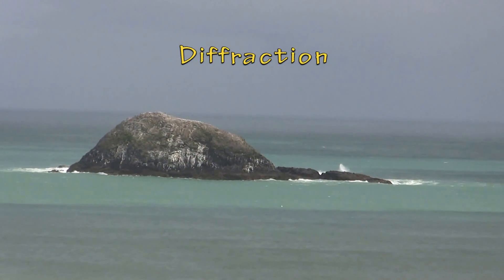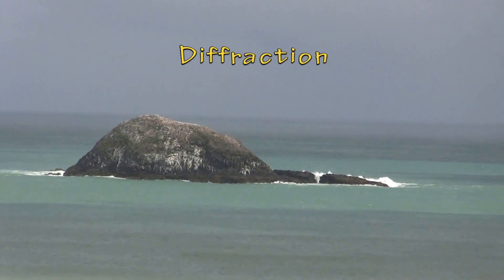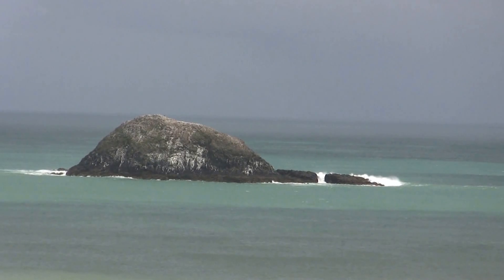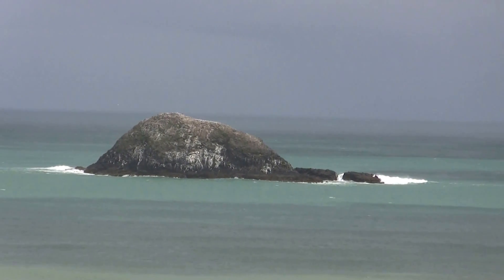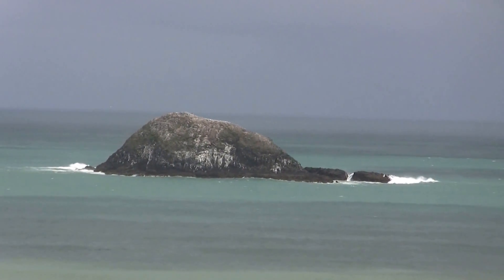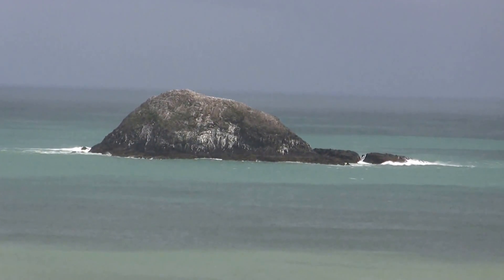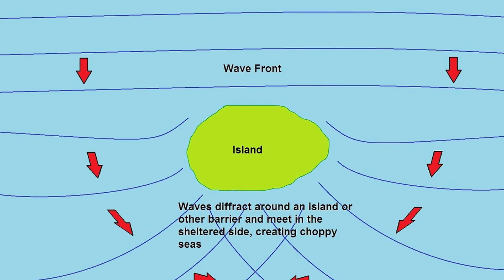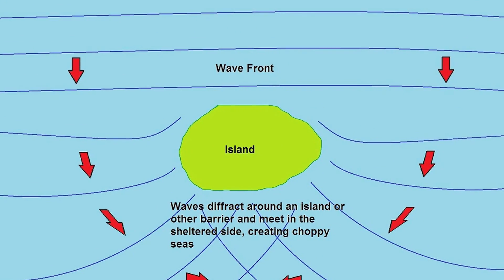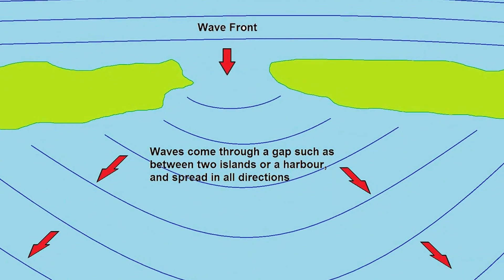Diffraction occurs when waves bend around a barrier, such as an offshore island like Oia Island off the coast of Muriwai. Once waves pass the barrier, they spread out in all directions rather than carrying on straight.